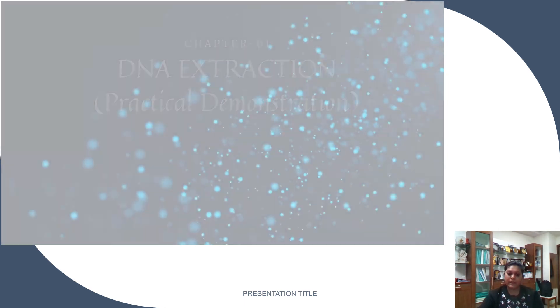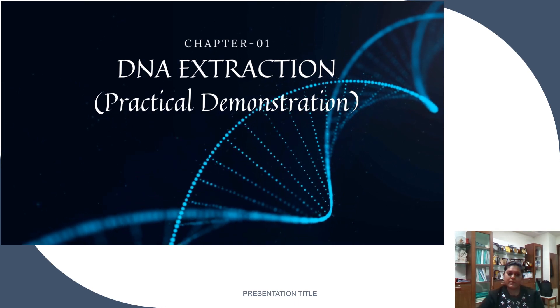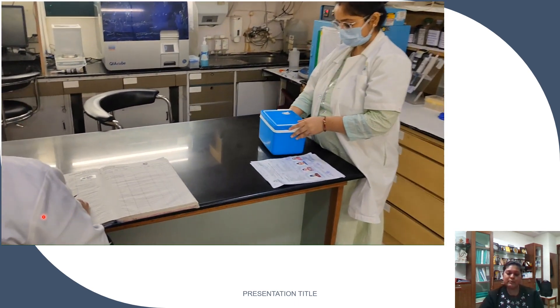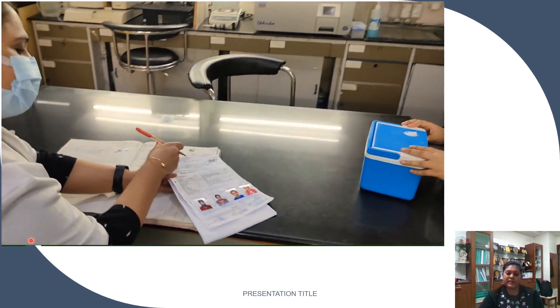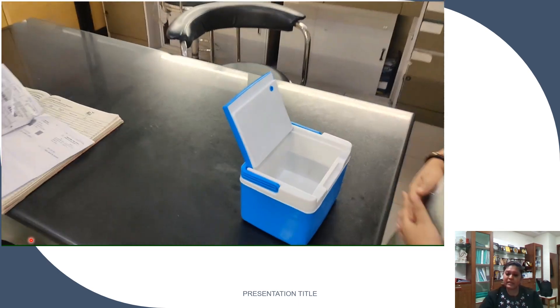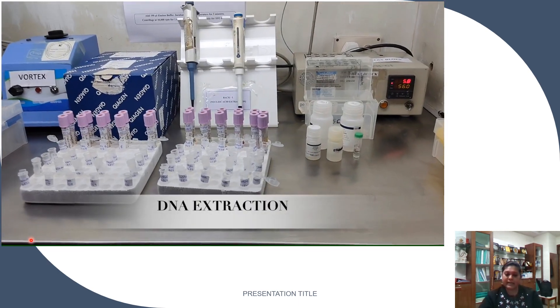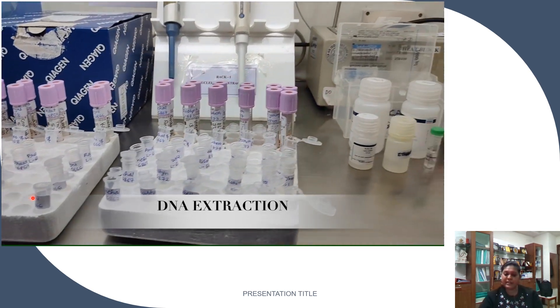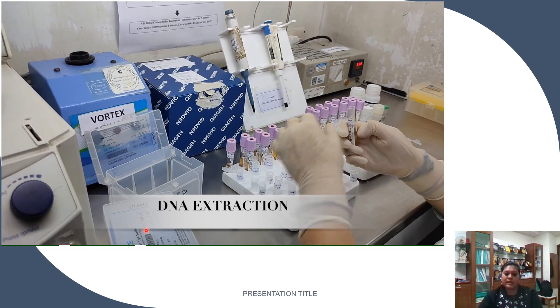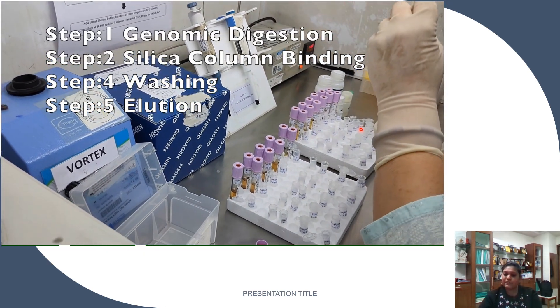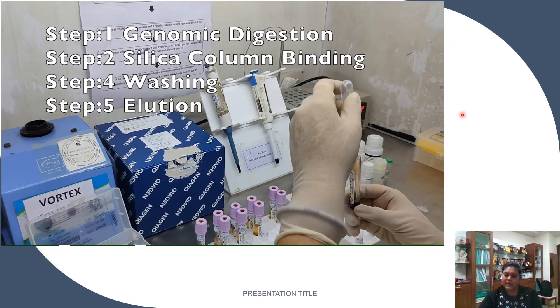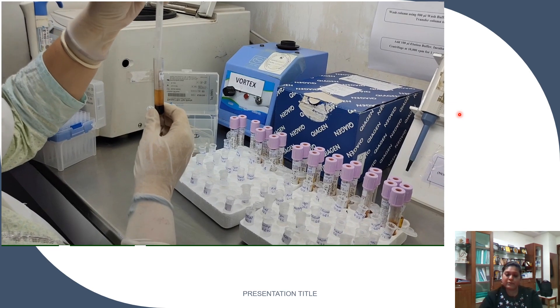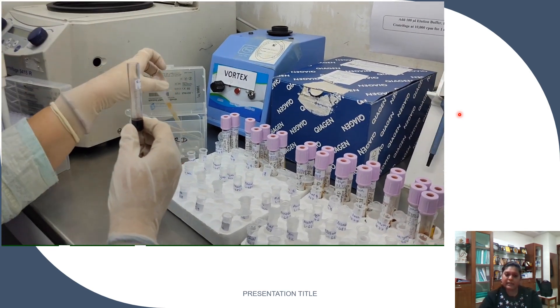For this practical demonstration, we'll perform extraction using a whole blood sample. As soon as we receive the sample in the laboratory, data entry is done and a specific lab ID is allocated to each sample. We then move to the DNA extraction area. The setup includes the Qiagen kit, a vortex mixer, and a centrifuge. We use EDTA tubes for the sample. We start by removing the plasma, and then extract the buffy coat, which is added to the first eppendorf tube.